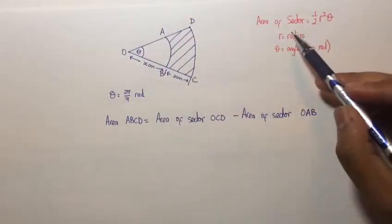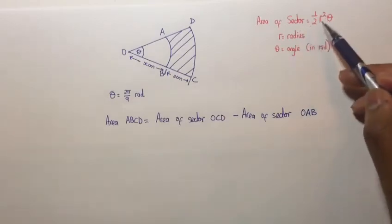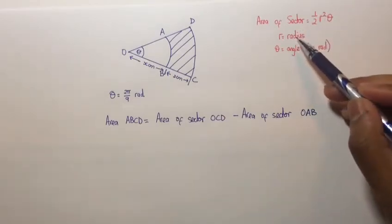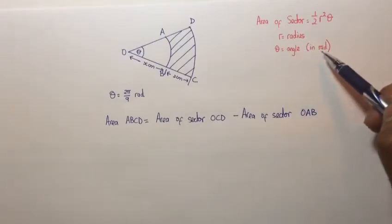The area of a sector is given by half R squared theta, where R is the radius of the sector and theta is the angle in radians.